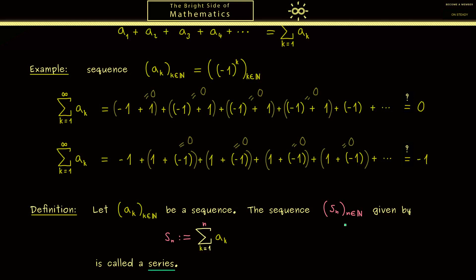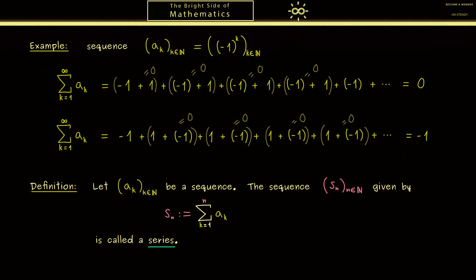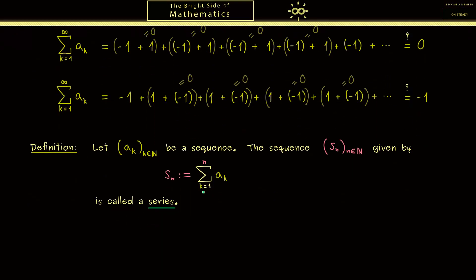And now you should see in the case that this sequence is convergent we have a meaning for the infinite sum. Therefore we are also able to define the symbol where we have infinity at the sum here. So this is simply the limit n to infinity of sₙ. Or without using a new name you simply would say it's the limit of these partial sums.